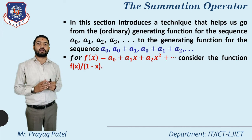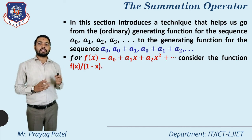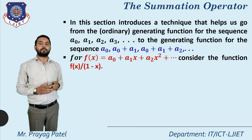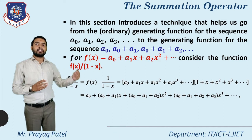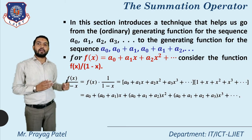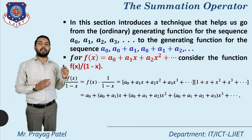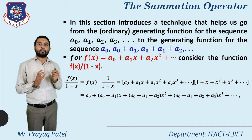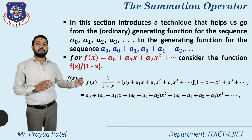Consider the function f(x) divided by (1 minus x). The coefficient is 1/(1-x) for the function f(x). We rewrite this as f(x)/(1-x) = f(x) · 1/(1-x). So f(x) = a0 + a1·x + a2·x² and so on.